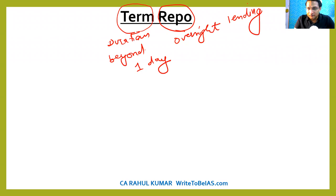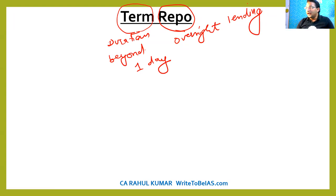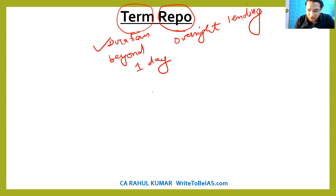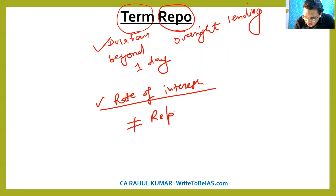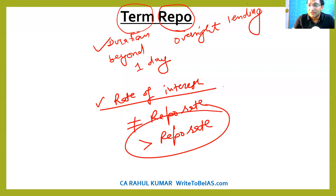Term means long term. This is a kind of long-term repo where the duration is increased beyond one day. Because the duration is more than one day, the rate of interest will also be different — it is not equal to the repo rate, it is more than the repo rate. The mechanism of auction is used to decide this interest rate.